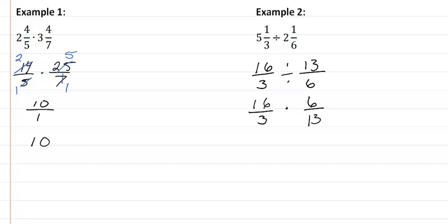I have a common factor here, we want to take that out. We have a common factor of 3. 3 divided by 3 is 1, 6 divided by 3 is 2.